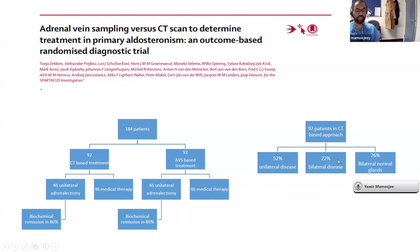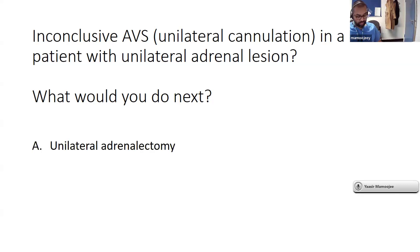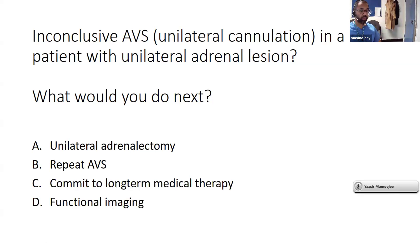One problem with a CT-based approach is that you can only decide which gland to remove if there's one lesion on one side. With AVS and bilateral cannulation, you can use the indices to make a scientific decision which adrenal to remove for unilateral excess. But what if you can only access one adrenal vein and the radiologist hasn't cannulated the other? The options would be: offer unilateral adrenalectomy if there's one lesion on CT, repeat adrenal vein sampling, commit to long-term medical therapy, or do functional imaging — such as metomidate PET-CT, which is difficult to access in most UK centres.